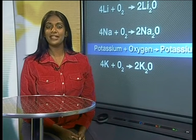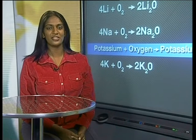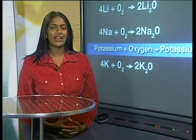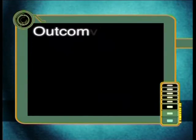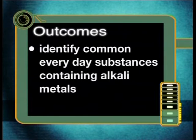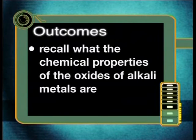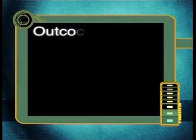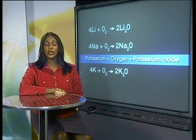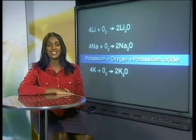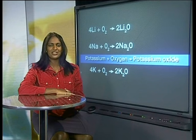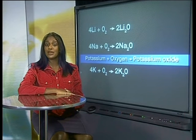We have now thoroughly examined how alkali metals react with pure oxygen. In this lesson, we will look at compounds that contain alkali metals. Here are the outcomes for today's lesson. By the end of this lesson, you should be able to identify common everyday substances containing alkali metals and recall what the chemical properties of the oxides of alkali metals are. Do you remember that when we reacted the alkali metals and oxygen, we saved the metal oxides formed for further testing? Let's use these white substances to determine what the chemical properties of these metal oxides are.